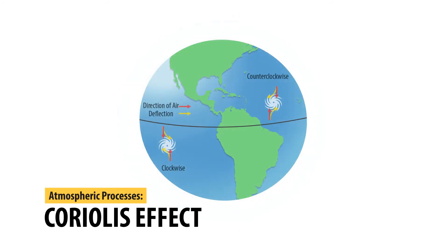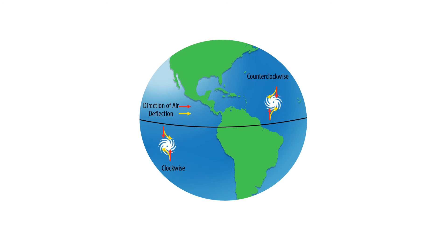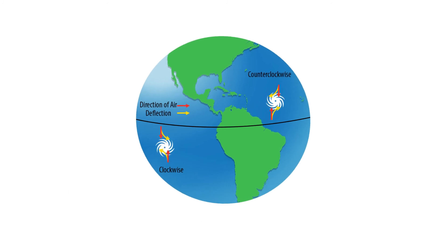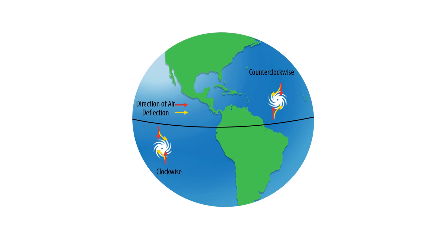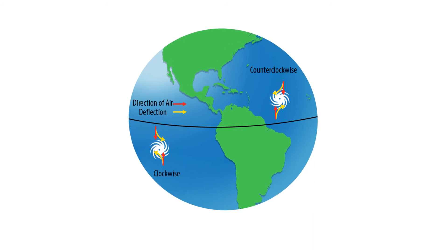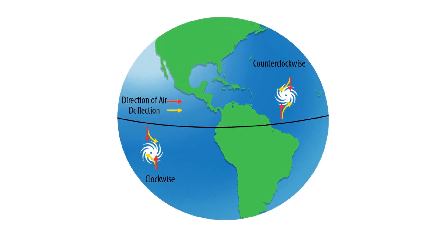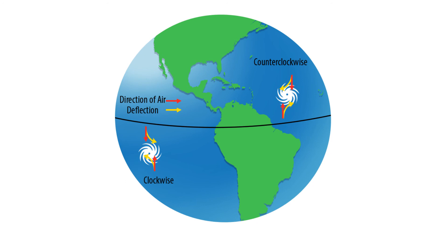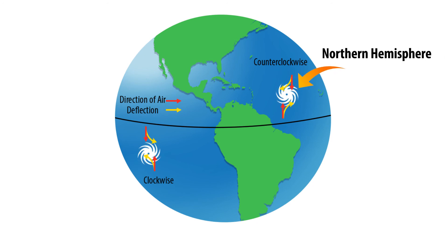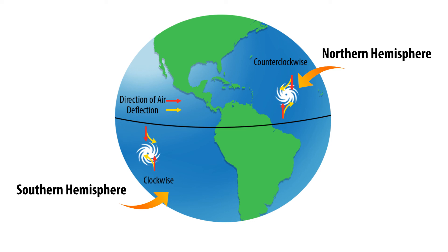The Coriolis effect is a process that occurs when gas is dragged sideways by the rotation rate of the world. It's the way that a moving object seems to veer toward the right in the northern hemisphere and left in the southern hemisphere.